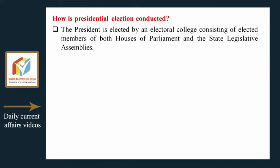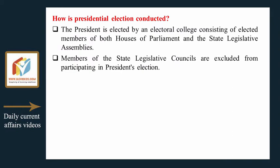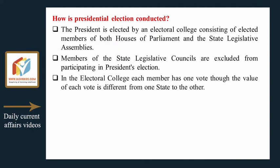How is the presidential election conducted? The president is elected by an electoral college consisting of elected members of both houses of Parliament and the state legislative assemblies. Members of the state legislative councils are excluded from participating in the president's election.